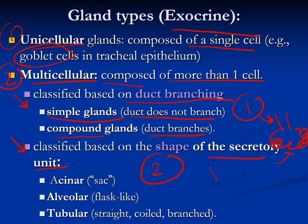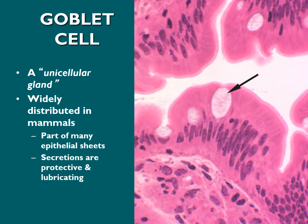Regarding the shape of the secretory unit: if it is like a straight tube, we call it tubular; if it is sac-like, we call it acinar; if it is flask-shaped, we call it alveolar. So the full classification is: unicellular or multicellular; if multicellular, then simple or compound based on duct branching; and then tubular, acinar, or alveolar based on secretory unit shape.